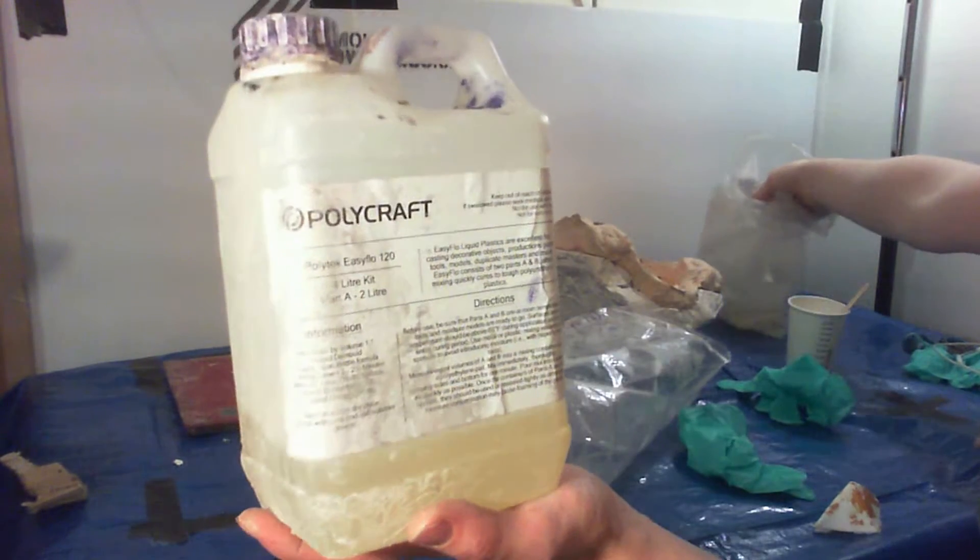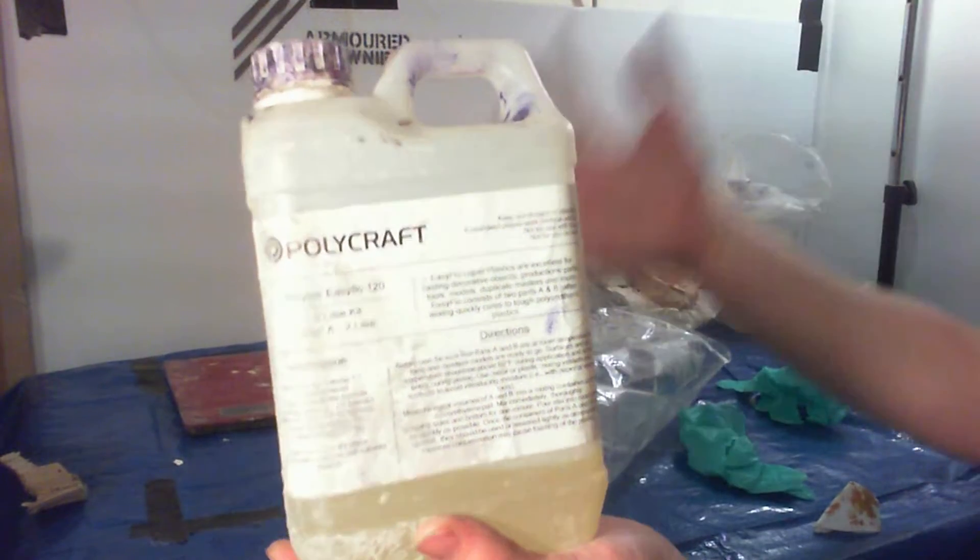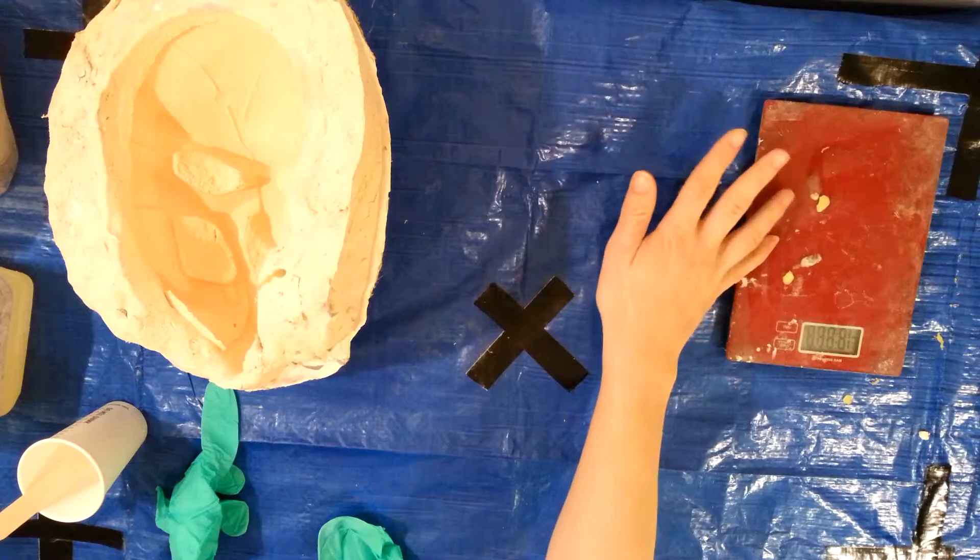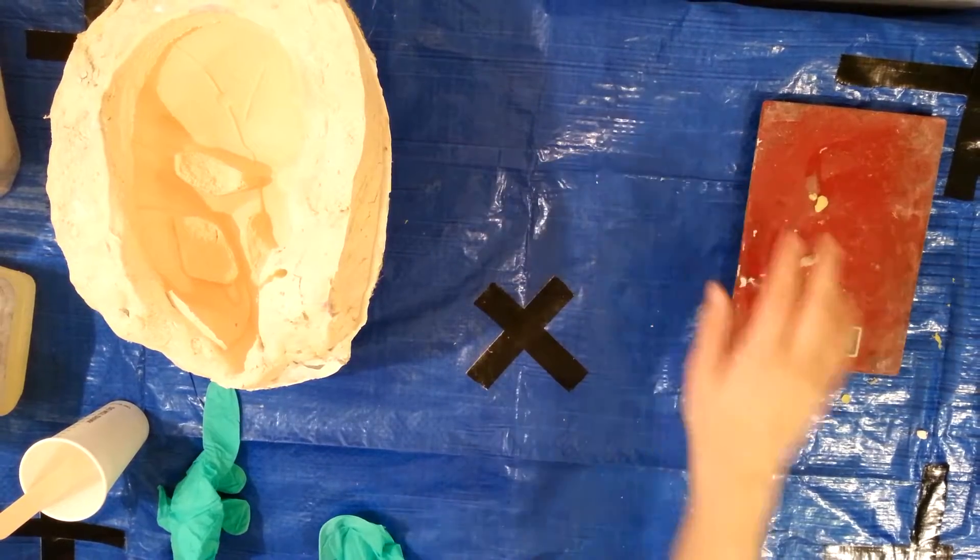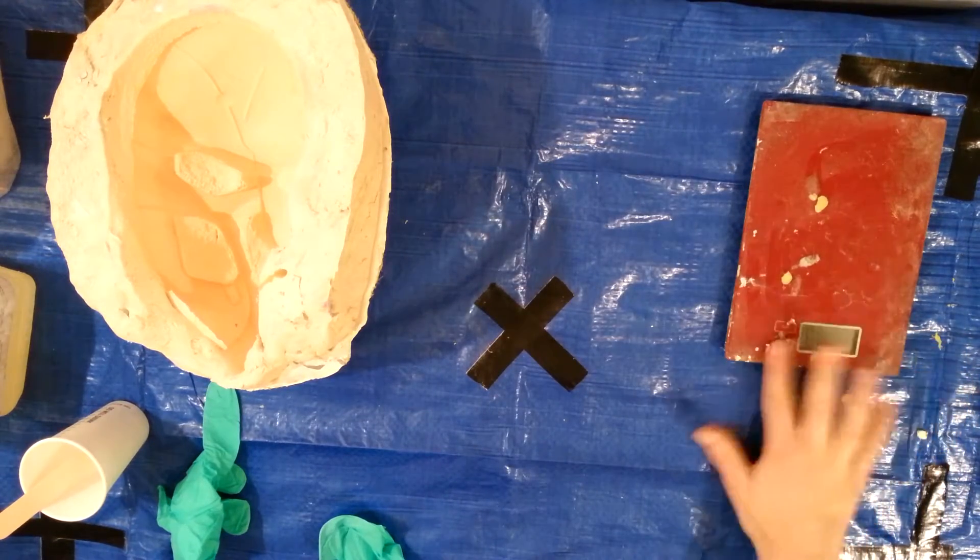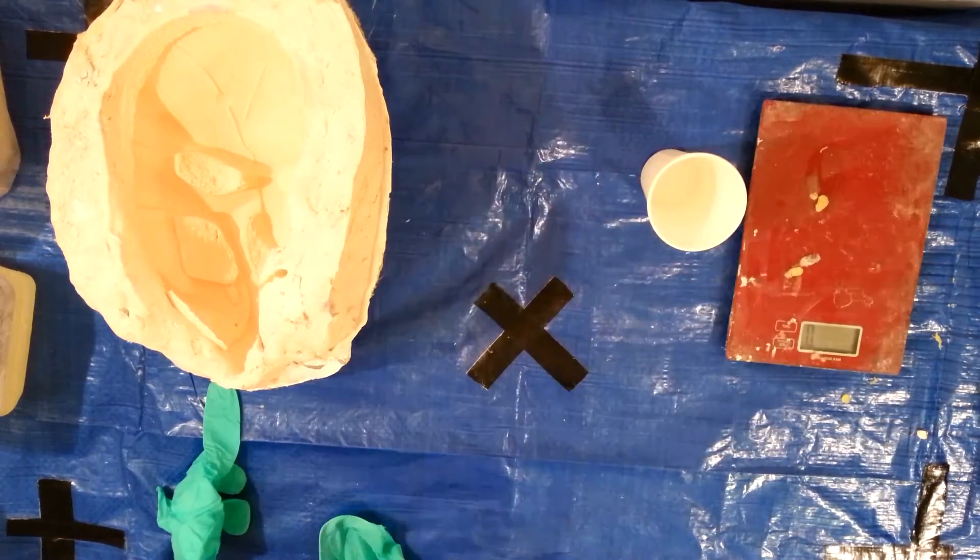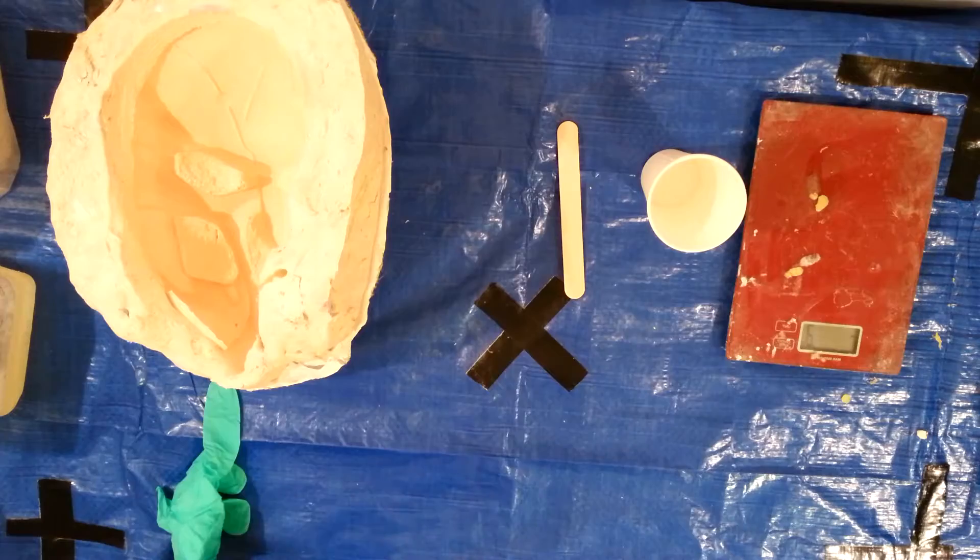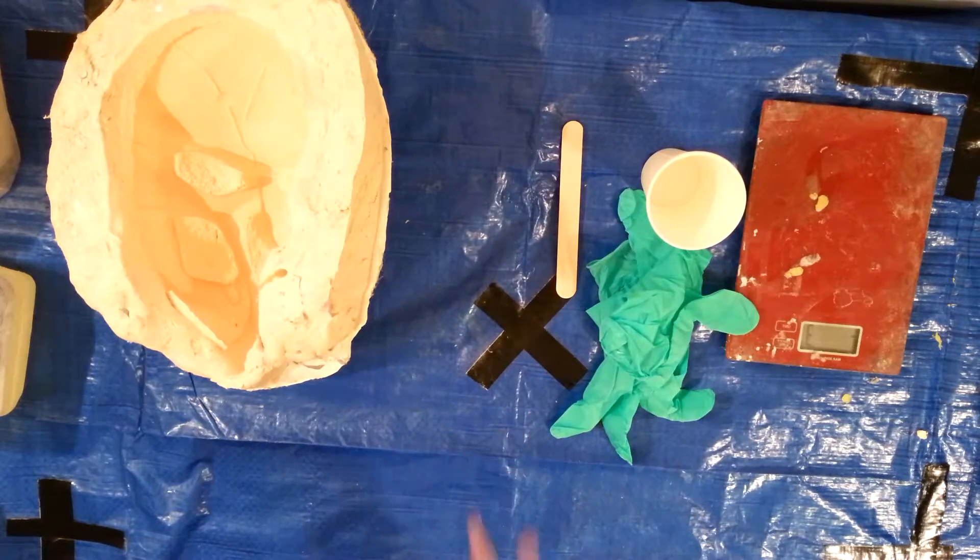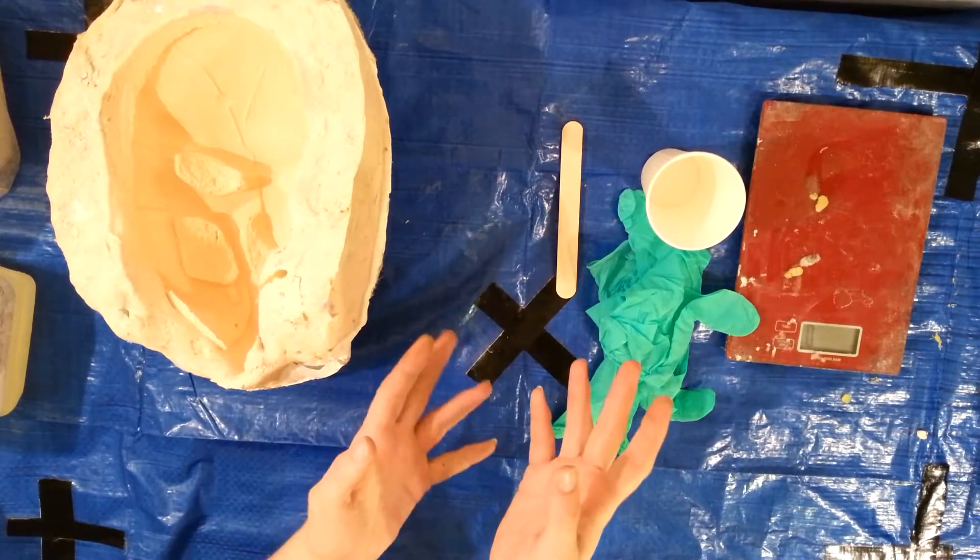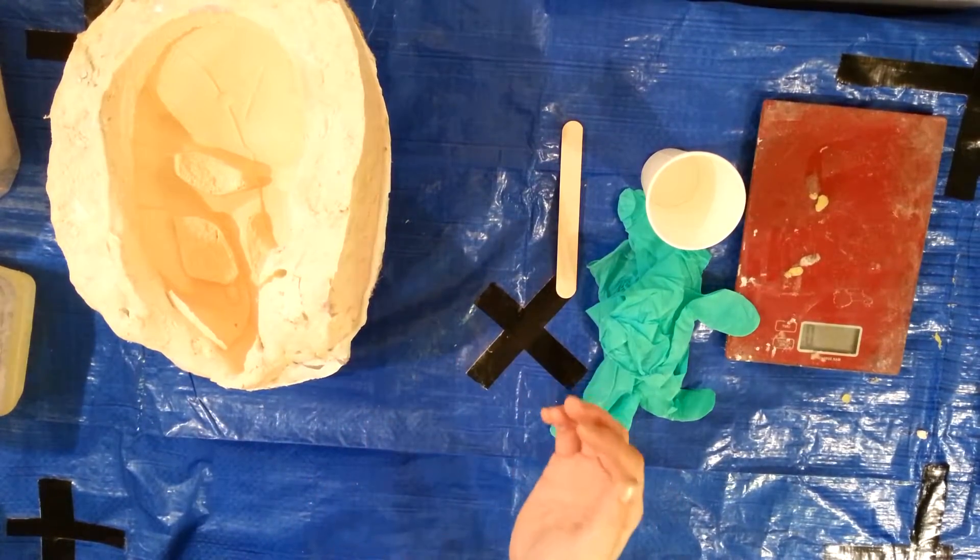This is about a 4 out of 10 in difficulty to work with on my arbitrary scale. I've already set up my workspace. We have a set of scales, normal kitchen scales, just don't use them for food afterwards, a mixing vessel which is just a disposable paper cup, a mixing stick which is a tongue depressor, and some gloves, just normal disposable gloves. And also we have a tarp down over our workspace, that's over the table and the carpet, because this stuff, there's a good chance this stuff will go everywhere.